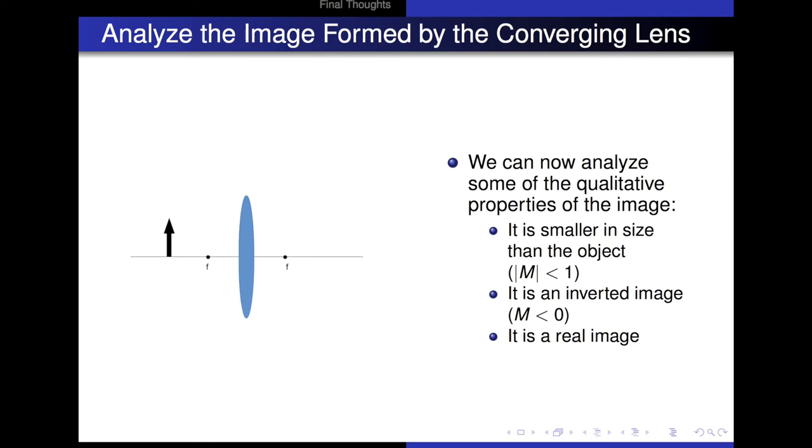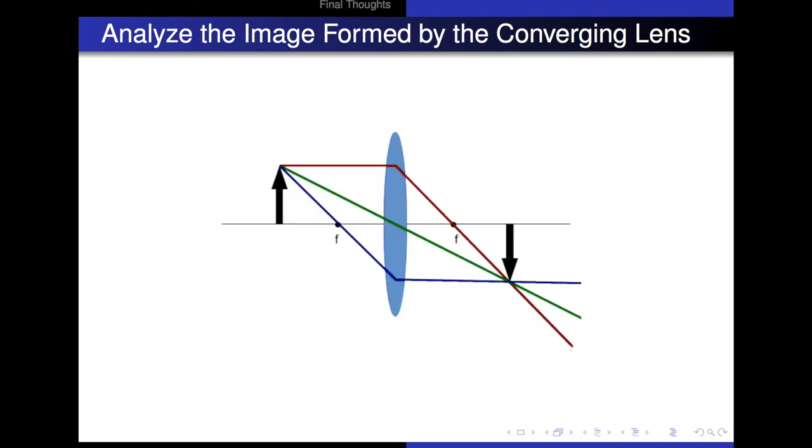Now how do I know that? Well, the easiest way to see that is to actually draw the ray diagram. So here I've drawn out the ray diagram for the system. You'll notice that the red ray first comes in parallel to the horizontal, exits through a focal point.